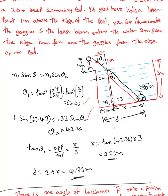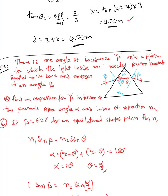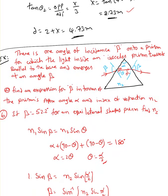The depth is 3 meters, so from that I found x = 2.73 meters. The total distance of the goggles from the edge is therefore 2 + 2.73 = 4.73 meters. That's the last example in this video.